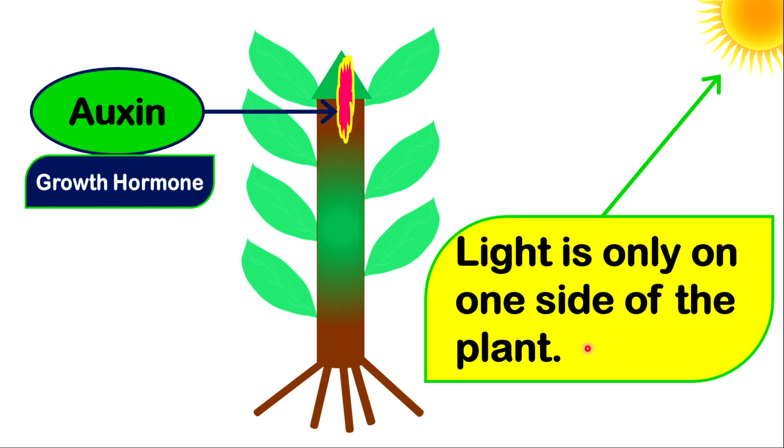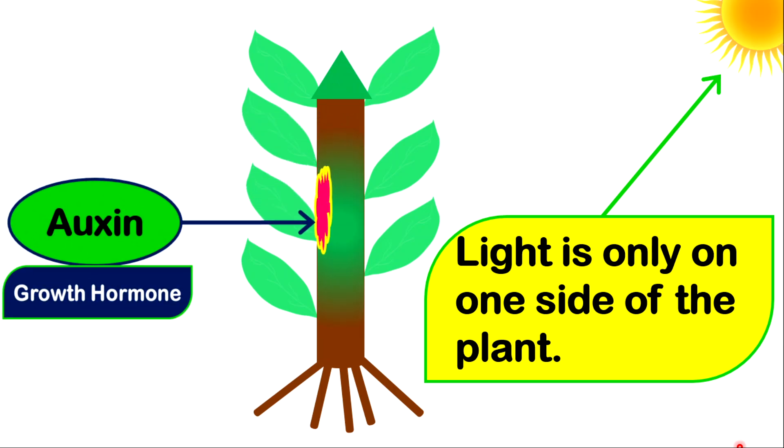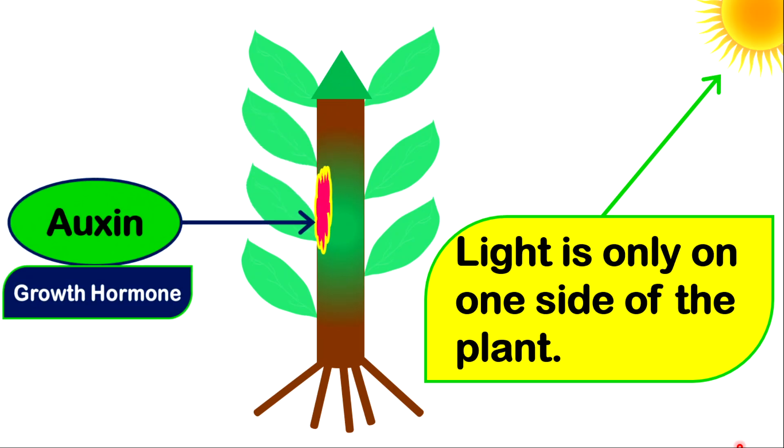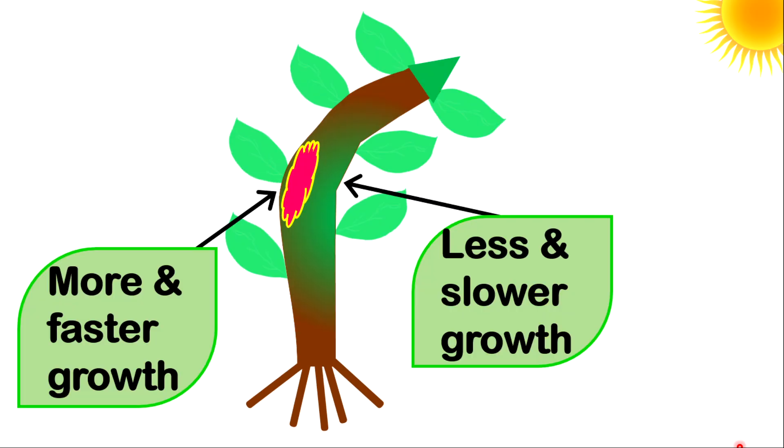Let's take for this example, we have light is on only one side of the plant. What will happen uniquely with the auxin, auxin will move towards the darker side. Auxin moving towards the darker side, there will be a great concentration of auxin on that side, opposing to the light side. The effect of this, notice what will happen, the plant will bend towards the light because the darker side will experience more and faster growth, opposing to the lighter side or the brighter side, you have less and slower growth. Hence, the bending will take place.